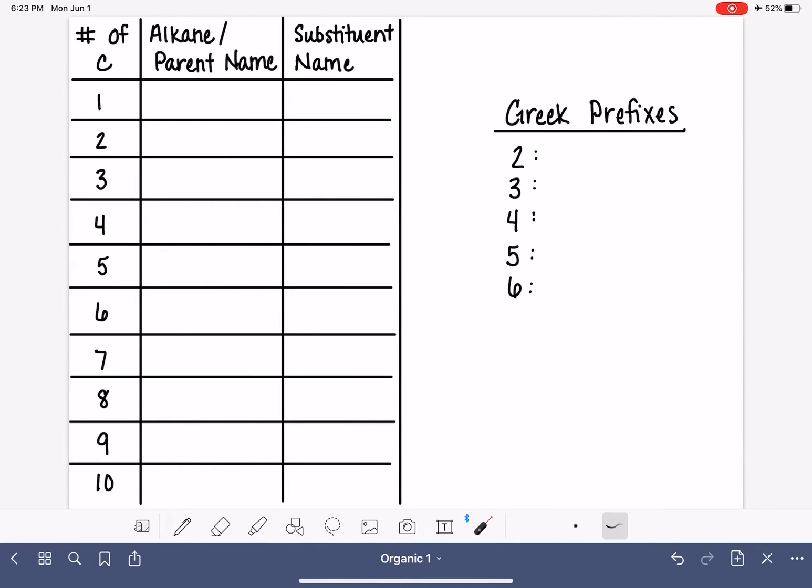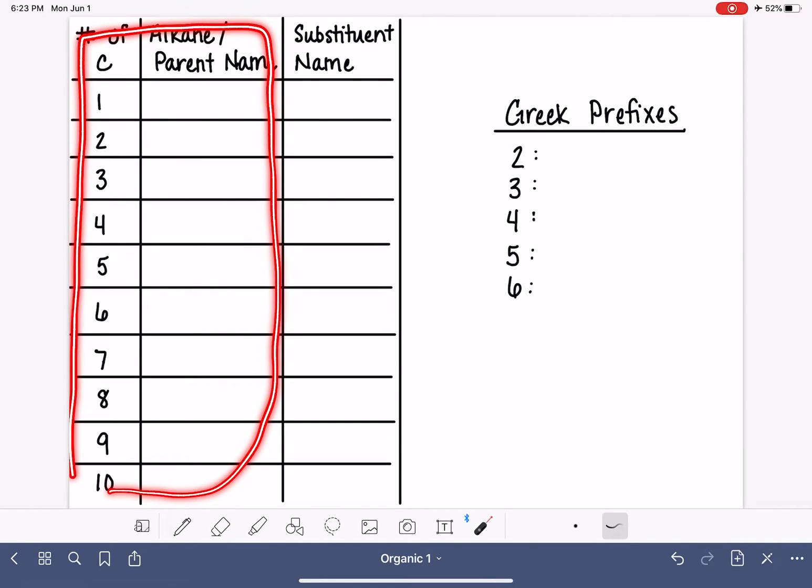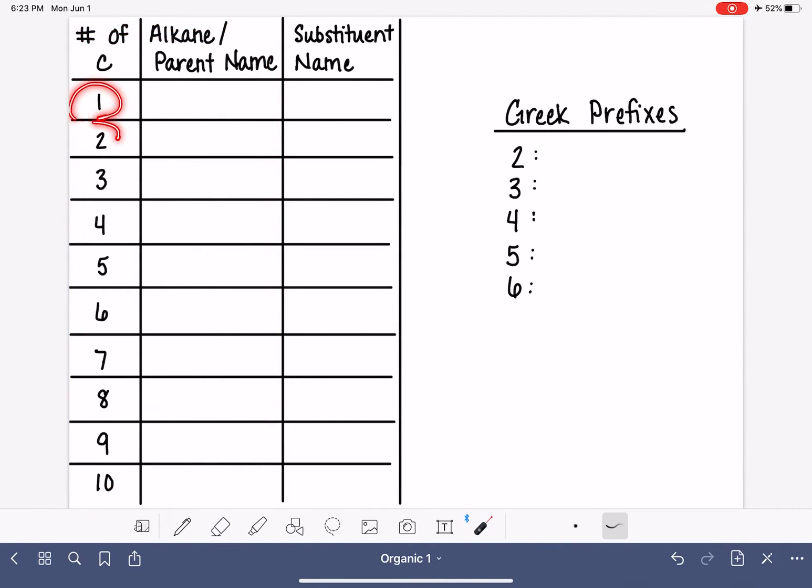So right now we're going to focus on this slide. We're going to put together a table based on the number of carbon atoms that might be in a parent chain and the base name that we would give to that particular type of molecule. In this column, we're going to come up with the alkane name or the base name or the name of the parent chain. This is something that you have to memorize, but fortunately you'll use it so much that it's going to be very easy for you to remember.